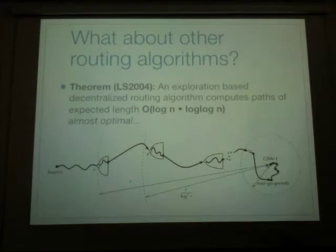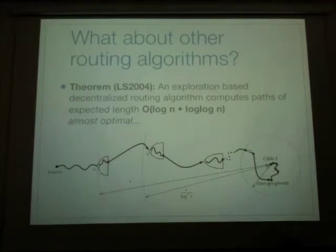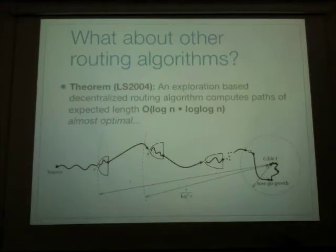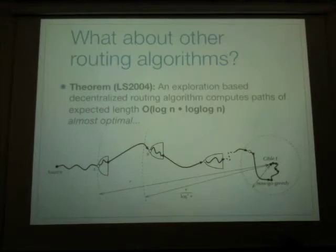You ask whether your log n annuli will fall inside this ball. What happens is that you look at the exponentially growing balls. This ball will be contained in one of the annuli, because here it's exponentially growing. Since this ball is about the same size as the annulus that it is contained in, the ratio of these two is constant as well. So basically, you have a probability one over log n to fall into this ball.